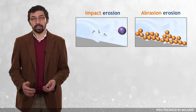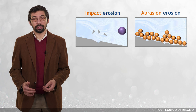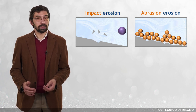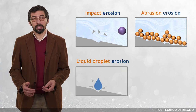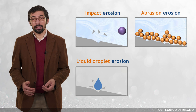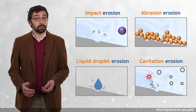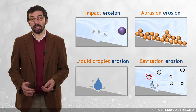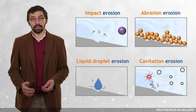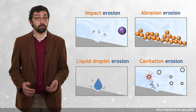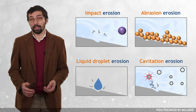For the sake of completeness, it is mentioned that erosion is not necessarily produced by solid particles. For instance, liquid droplet erosion is due to the impingement of high-speed liquid droplets, and it is a cause of failure of steam turbines. Cavitation erosion arises from the pressure wave generated by the collapse of cavitation bubbles, and it is a serious issue in fluid flow machinery, including pumps, water turbines and marine propellers.